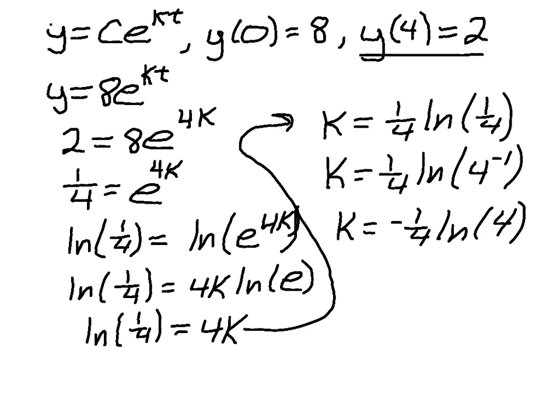...which means that I can substitute that back into my original equation. So I'm at y equals 8e to the negative 1 fourth natural log of 4 times T. And I'm not done yet, but I'm going to move on to a new page to do this next part.